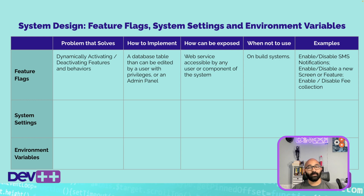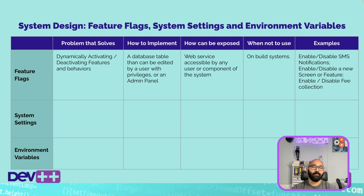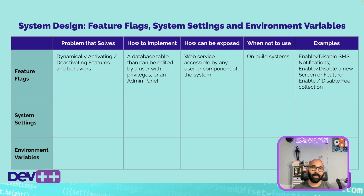How do you implement this? It's usually as simple as a database table that can be edited by a user with privileges or super admins. There are also a couple of external APIs that provide similar services — maybe an overkill, but as the system grows this could be a good way to use it. It's simply an external system you call via API and they tell you which flags are enabled and which aren't, with a nice admin panel interface to manage them.